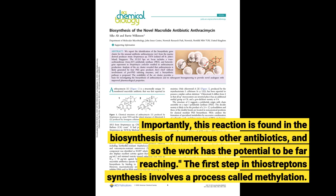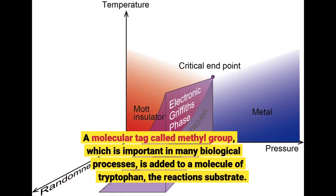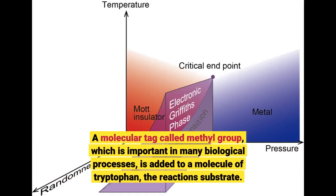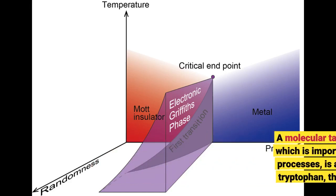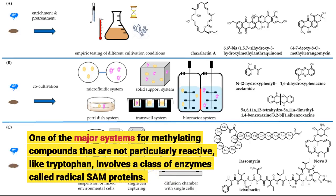The first step in thiostrepton synthesis involves a process called methylation. A molecular tag called a methyl group, which is important in many biological processes, is added to a molecule of tryptophan, the reaction substrate. One of the major systems for methylating compounds that are not particularly reactive, like tryptophan, involves a class of enzymes called radical SAM proteins.